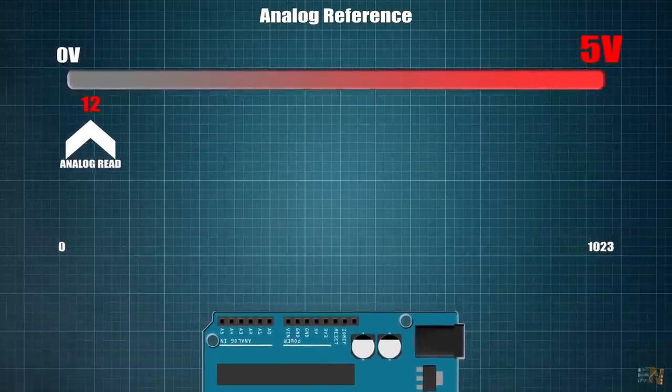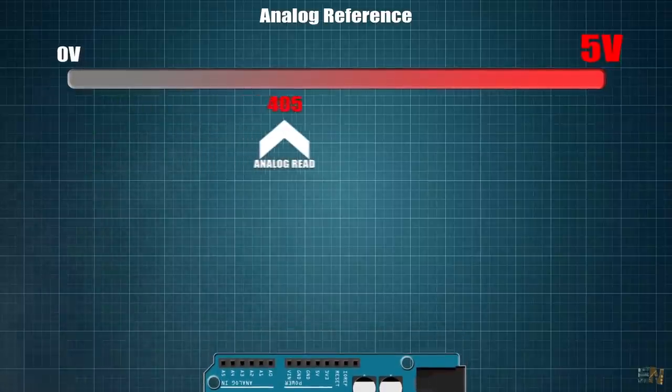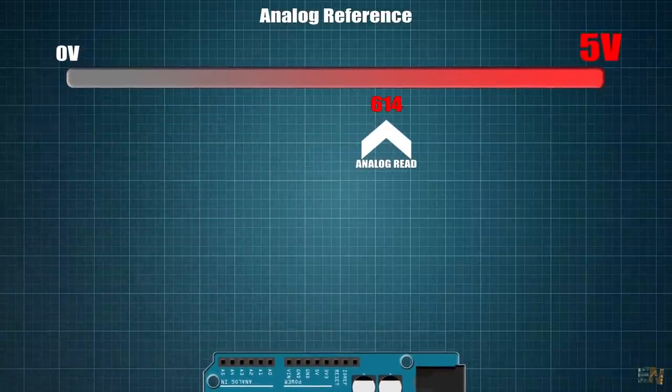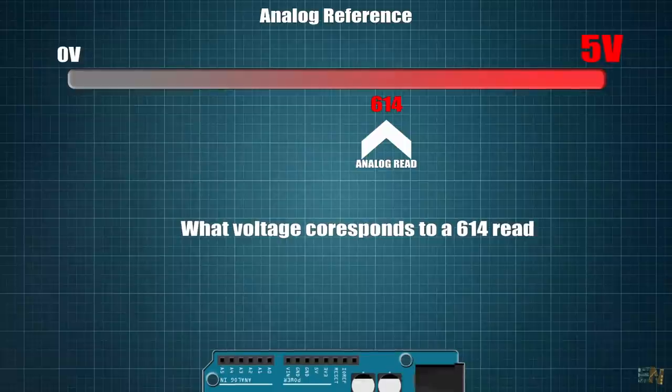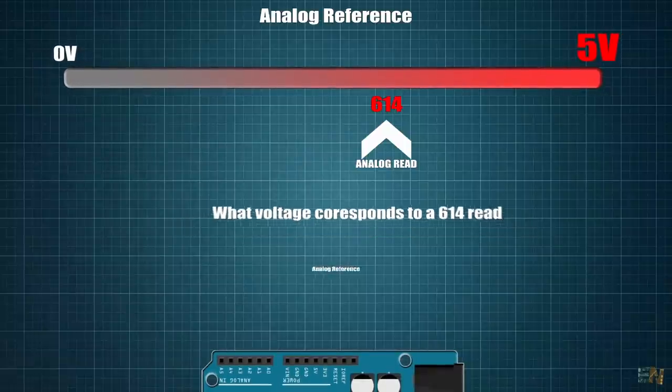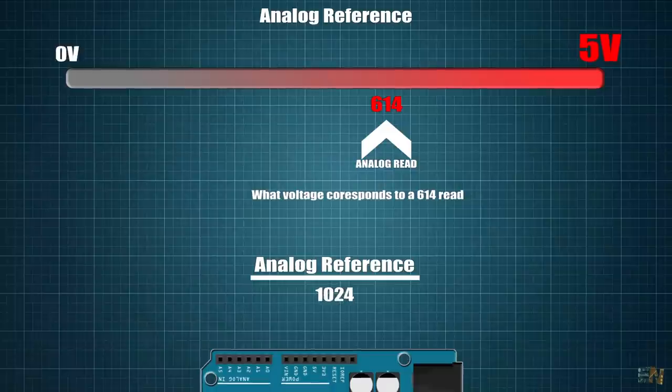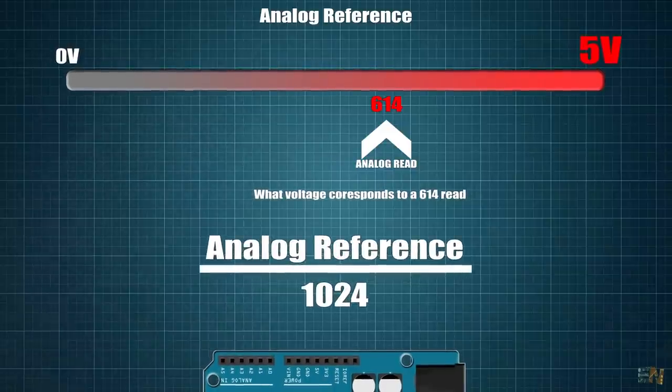So imagine you make a measurement and the analog read will give you a value of 614 let's say. But what voltage is that?